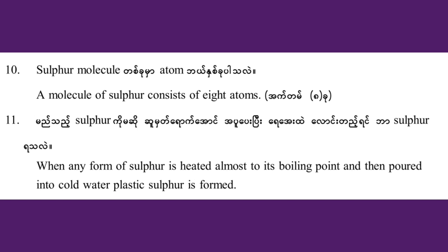When any form of sulfur is heated almost to its melting point and then poured into cold water, plastic sulfur is formed. Plastic sulfur is not a strong form of sulfur.